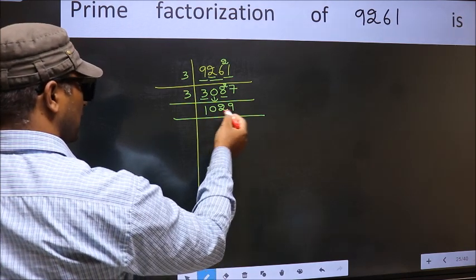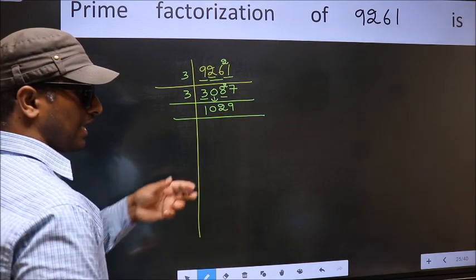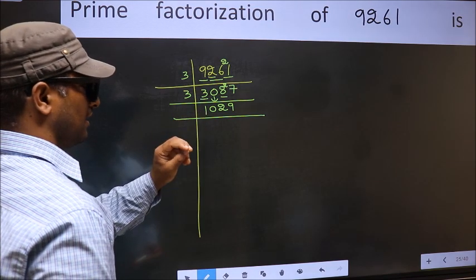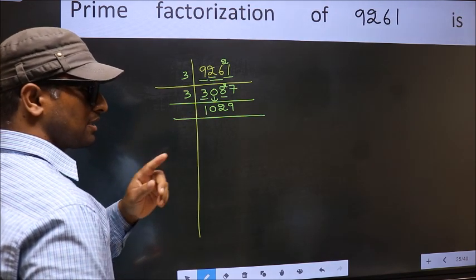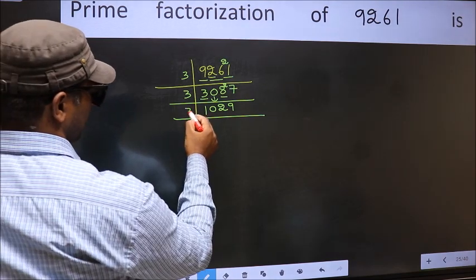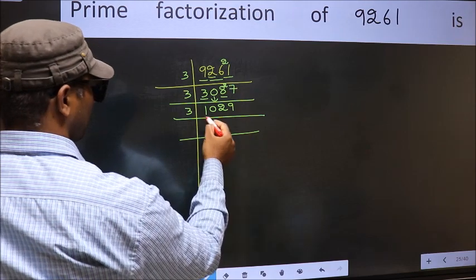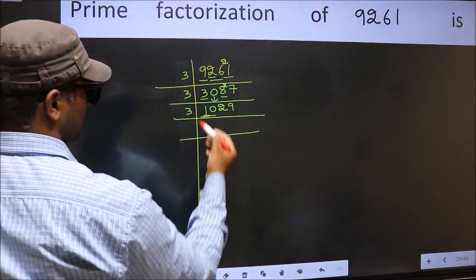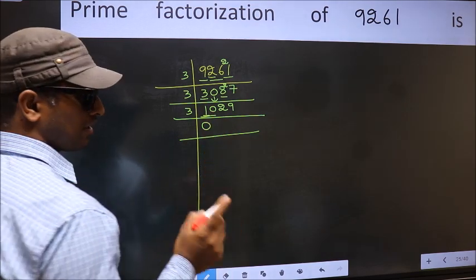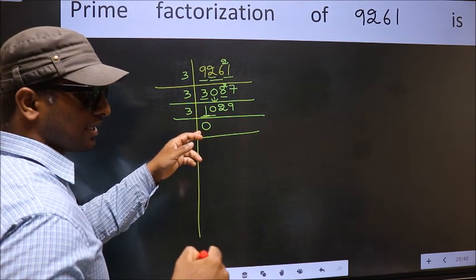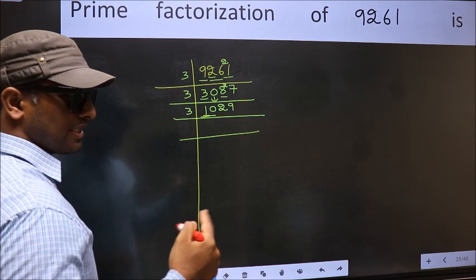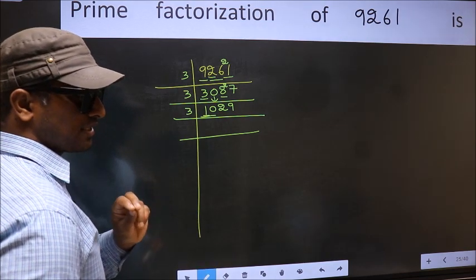Now check whether 1029 is divisible by 3 by adding the digits: 1 plus 0 plus 2 plus 9 equals 12, and 12 is divisible by 3. So this number is also divisible by 3. Take 3 again. First number is 1, which is smaller than 3, so take 2 numbers: 10. Since you are taking 2 numbers, put 0 — but 0 at the start does not count, so no need to write 0 at the start. Anywhere else you take two numbers, compulsorily put 0.